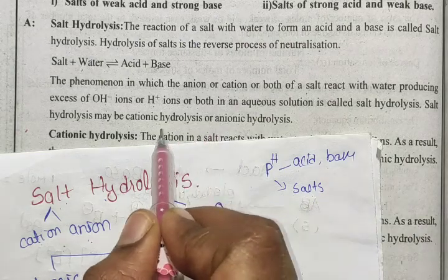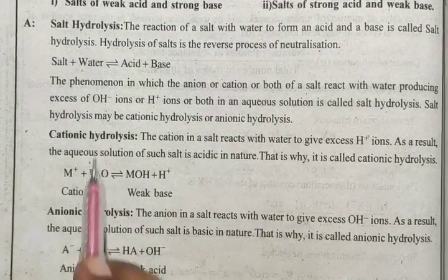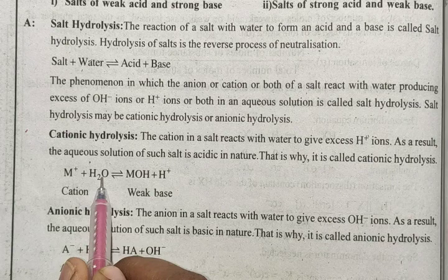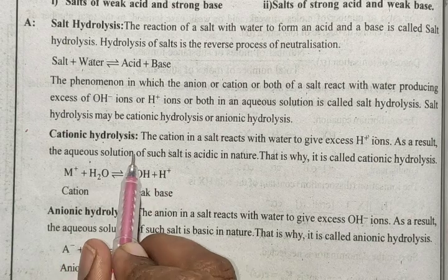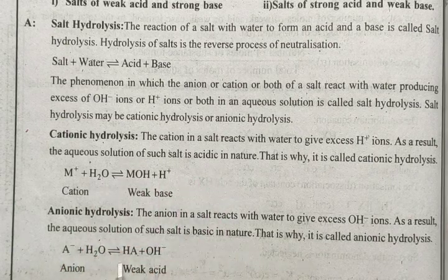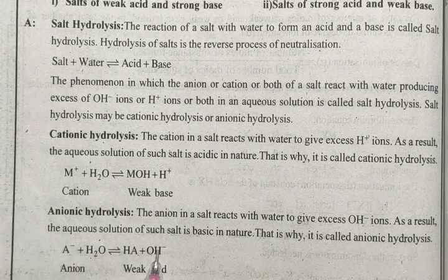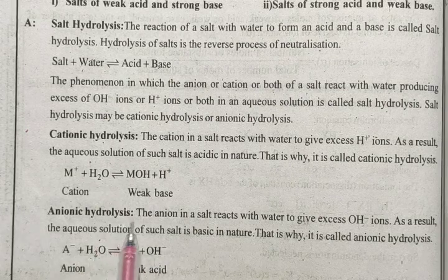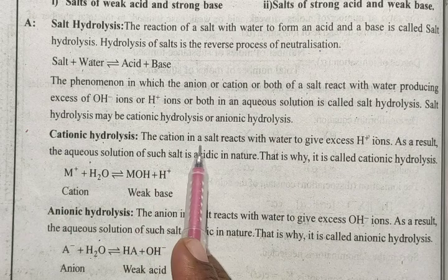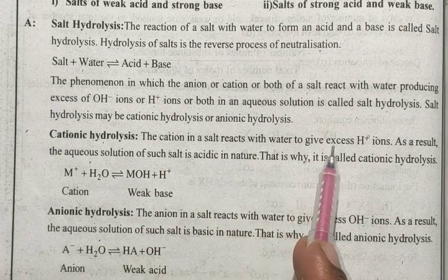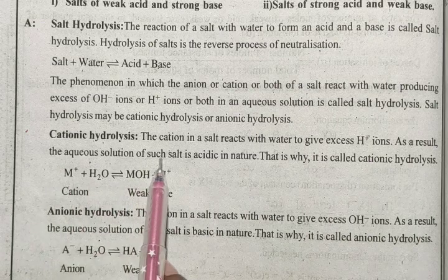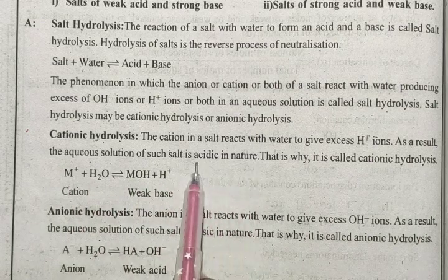Salt hydrolysis is of two types: cationic and anionic hydrolysis. In cationic hydrolysis, the cation of the salt reacts with water to give excess H⁺ ions. As a result, the aqueous solution of such salt is acidic in nature.